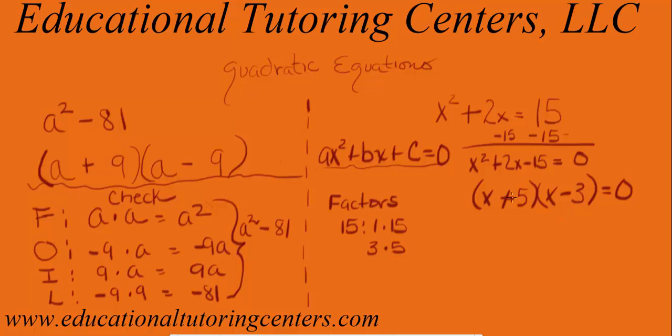So now that this is factored, I want to check myself. And I do what I call the smile method. So there's the chin, and there's the smile. So the smile method tells me I have this times this, which is 5x.